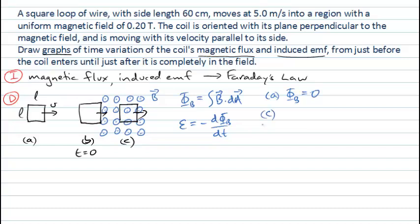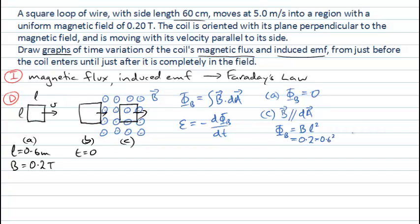Almost as easy is situation C, where the coil is completely inside the field. The magnetic field in this case will be parallel to the area vector, so this flux will simply be B times dA over the entire area — that's just B times the area. Given that this is a square of side length L, that's just B·L². Knowing that L = 0.6 m and B = 0.2 T, this is just 0.2 × 0.6², which gives a value of 72 milliwebers. The Weber is the unit for magnetic flux, and this is a constant — how much flux is in the coil when it's completely within the field.